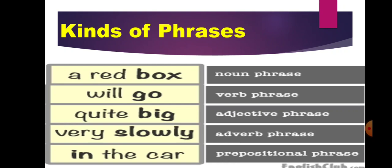For example, 'a red box' — the word box is a noun and it is used as its head word, so it's a noun phrase. 'Will go' — a helping verb with a main verb — that is a verb phrase. 'Quite big' — the word big is an adjective and it is the head word, so quite big is an adjective phrase. 'Very slowly' — it's an adverb phrase. 'In the car' — it's a prepositional phrase. In this chapter we will discuss noun phrase, verb phrase, and adverb phrase. In the next chapter we will teach adjective phrase and prepositional phrase.